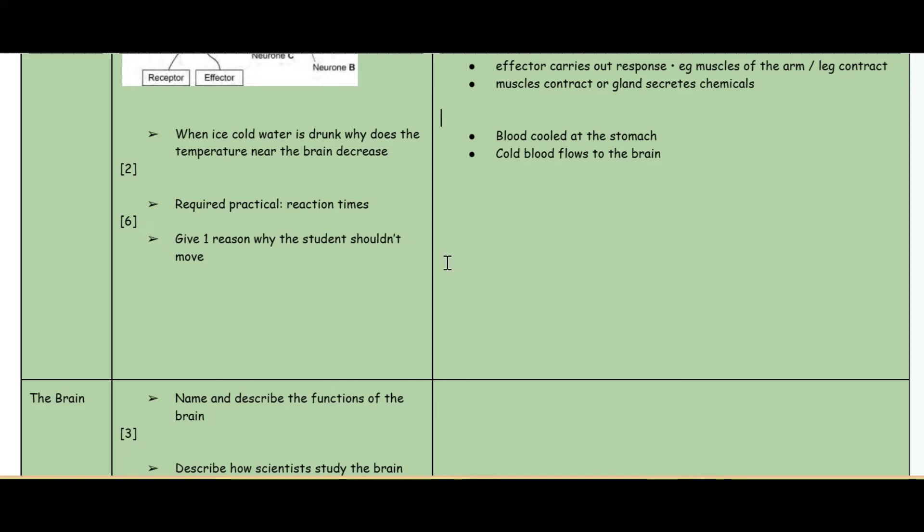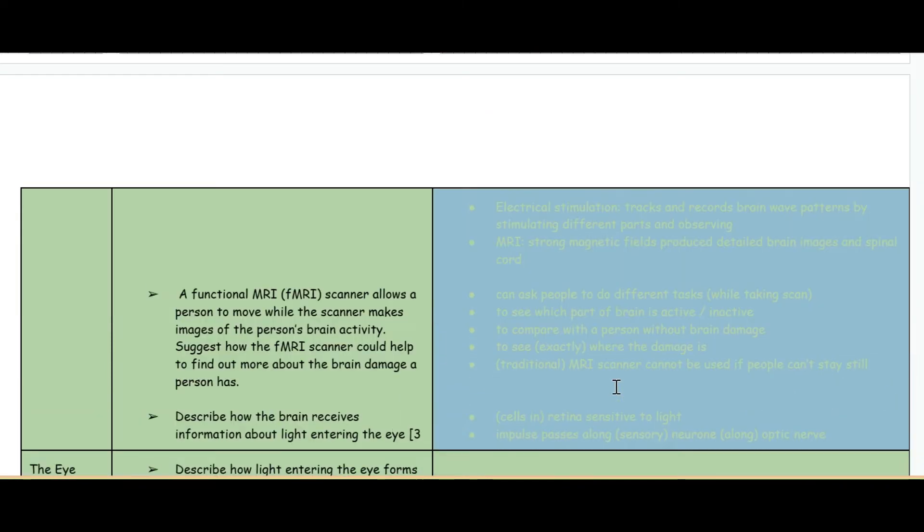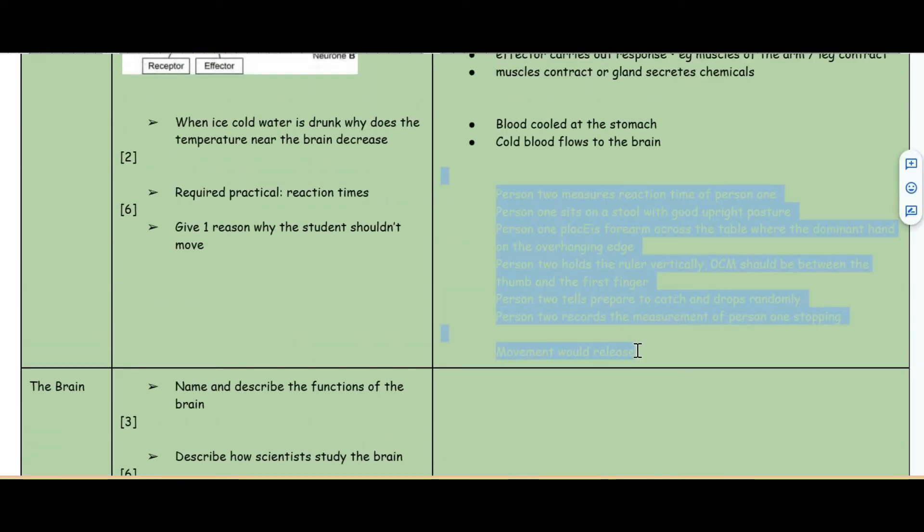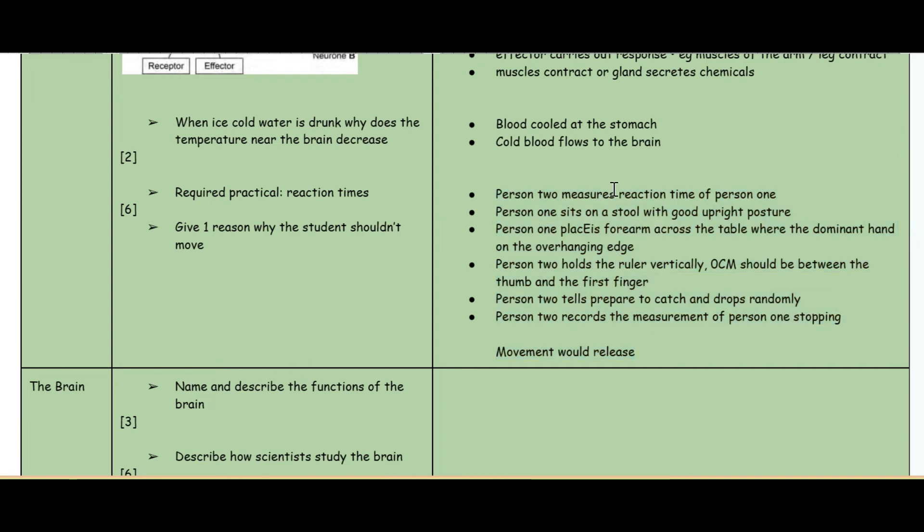The next question is the required practical on reaction times. Person two measures the reaction time of person one. Person one sits on a stool with good upright posture. Person one places their forearm across the table with the dominant hand on the overhanging edge. Person two holds the ruler vertically with zero centimeters between the person's thumb and first finger. Person two prepares to catch, tells them to prepare to catch, and drops randomly.